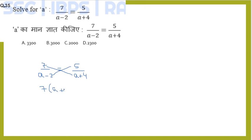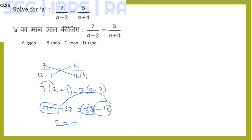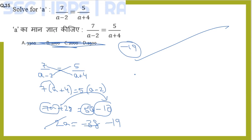Cross multiply: 7 into (a+4) equals 5 into (a-2). That's 7a plus 28 equals 5a minus 10. Simplifying: 7a minus 5a equals minus 10 minus 28, which gives 2a equals minus 38. Therefore a equals minus 19. The answer is minus 19.